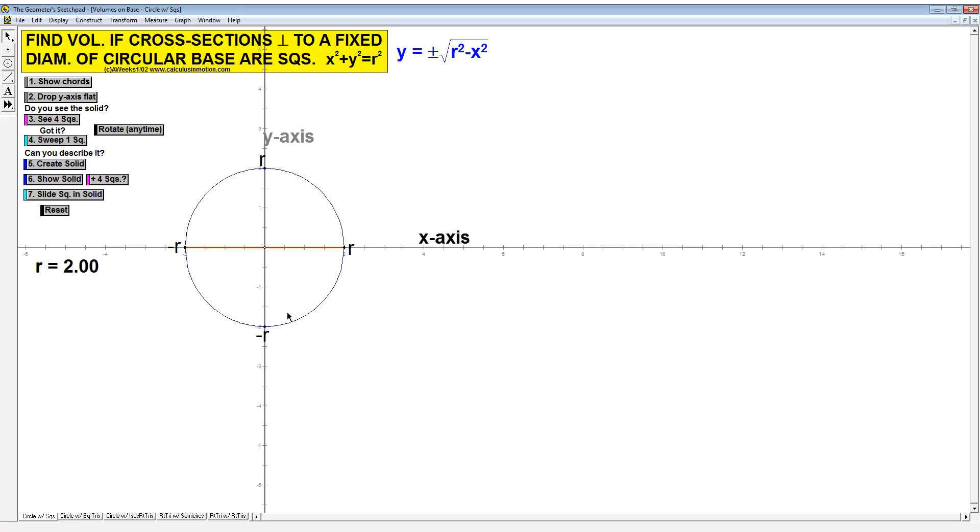In essence, what we're going to do is divide this up into a whole bunch of sections again, so our rectangles. Let me show those chords. There they are right there. We're looking at the distance between the two endpoints. We want the distance of this line segment right here.